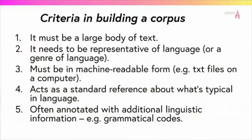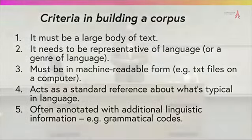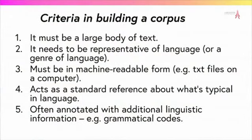A well-built corpus can act as a nominal standard reference for what is typical in a language. The British National Corpus, for example, was built to be broadly representative of British English. Corpora are also often annotated with additional linguistic information — codes that make explicit linguistic features within the text, such as grammatical codes. If a word is labeled as a noun, that doesn't make it a noun; it simply makes explicit that people normally process it as a noun. That's what this type of annotation involves.